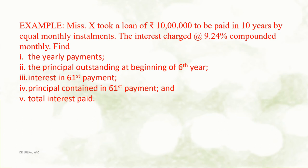Next example: Ms. X took a loan of Rs 10 lakh to be paid in 10 years by equal monthly installments. The interest is charged at a rate of 9.24% compounded monthly. Find the monthly payments, the principal outstanding at the beginning of the 6th year, interest in the 61st payment, principal contained in the 61st payment, and total interest paid.